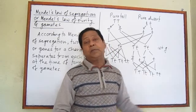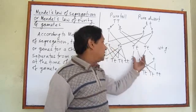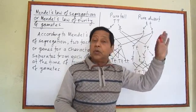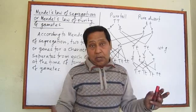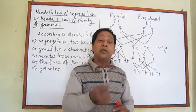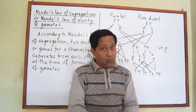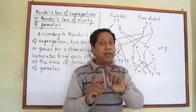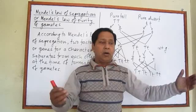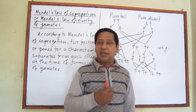According to him, these factors are pure for their own identity — they never blend with each other. That's why the same law is also called the Law of Purity of Gametes. Similarly, if a red flower pea plant is cross-pollinated with a white flower pea plant, they never give an intermediate product like a pink flower. This is because red remains always red — it is pure for being red — and white remains always white. Whether the genes for red and white lie together, they never blend. When gametes form, they segregate from each other.